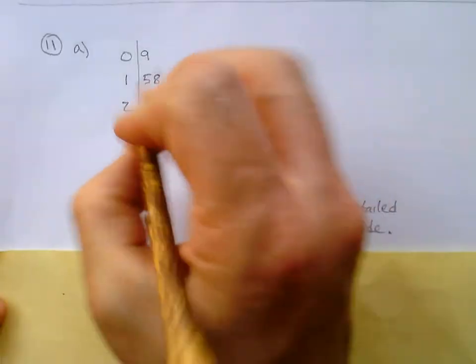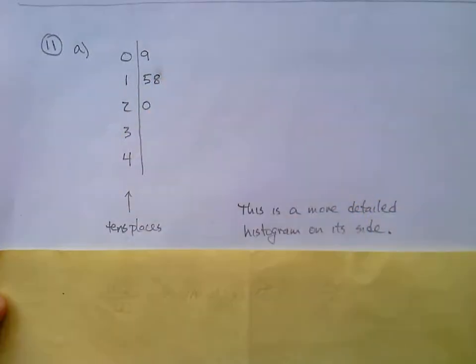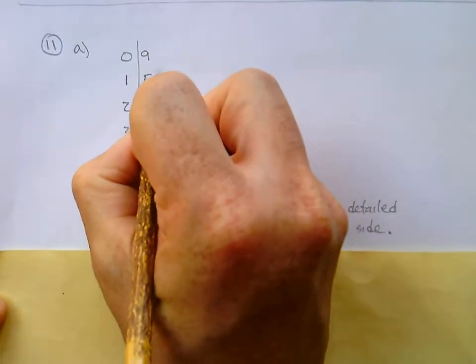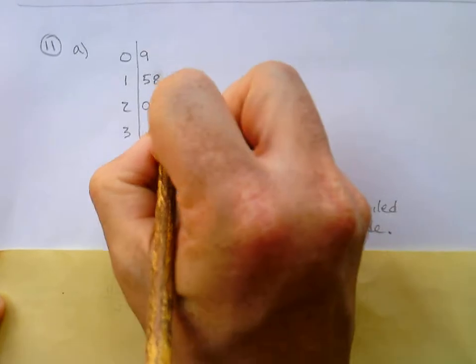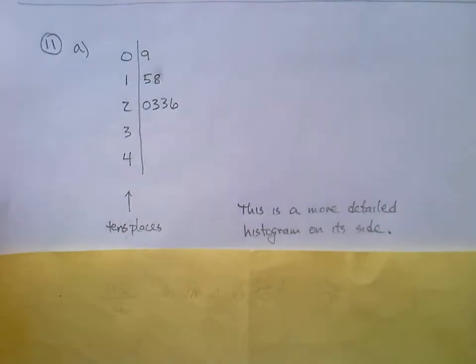We'll do the rest of it. In the 20, we, 20 tens place, we had 20. We had 23. We had another 23. So we'll write that again. And we had 26. So we're going to write 0, 3, 3, 6.